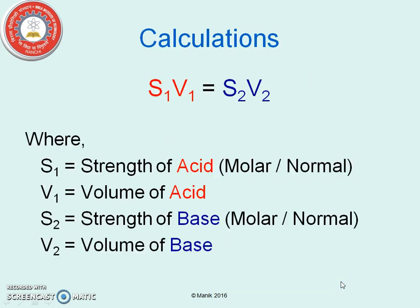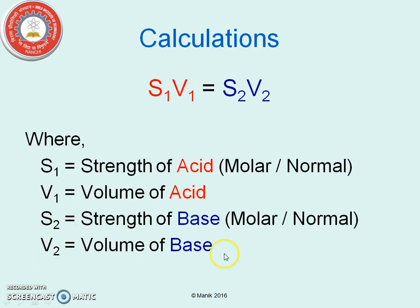The general equation for titration calculations is S1V1 = S2V2, where S is the strength and V is the volume. S1 is the strength of the acid, V1 is the volume of the acid, S2 is the strength of the base, and V2 is the volume of the base.